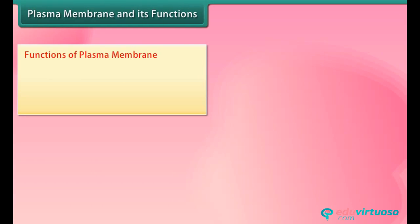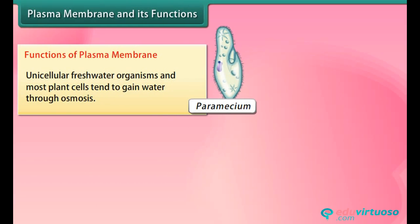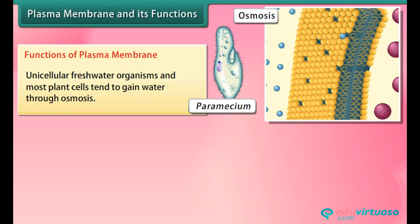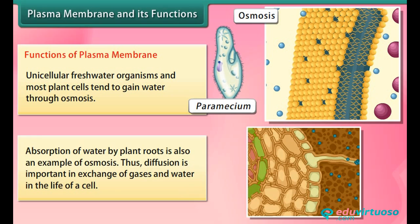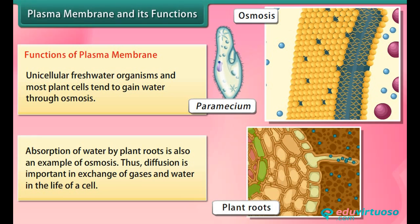Unicellular freshwater organisms and most plant cells tend to gain water through osmosis. Absorption of water by plant roots is also an example of osmosis. Diffusion is important in the exchange of gases and water in the life of a cell.